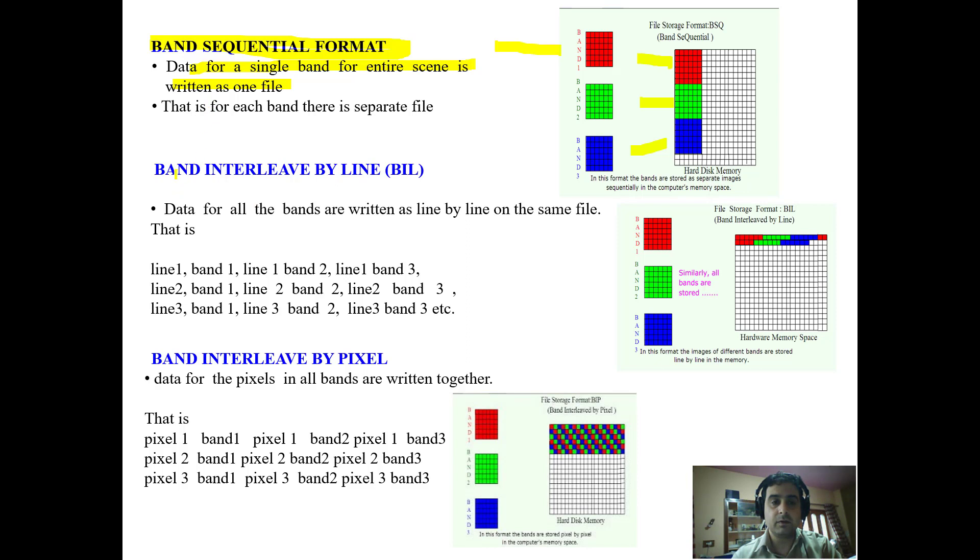The second format, band interleave by line, means data for all bands are written line by line on the same file. Now we have to understand that the information from all bands is stored in the same file. How is it stored? Stored line by line.